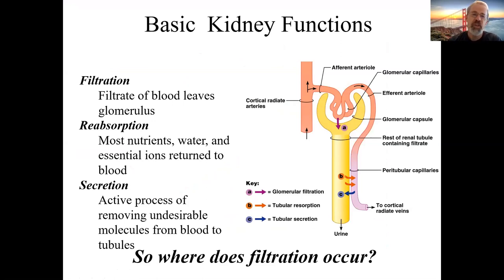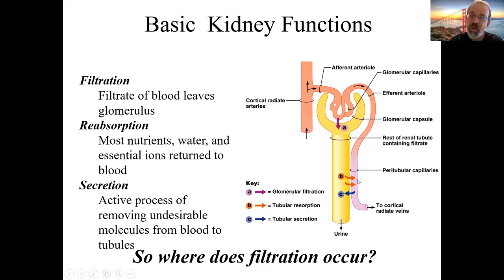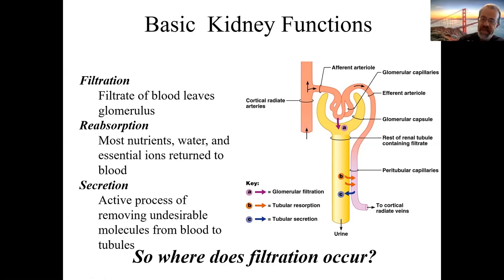To summarize: filtration is the plasma leaving the glomerulus and entering the capsule. What gets reabsorbed includes most nutrients, water, and essential ions like sodium, potassium, and calcium — mostly returned to the blood. What gets secreted includes undesirable molecules from the blood back into the tubules — metabolic waste, toxins. The urinary system is more of a regulatory organ than simply an excretory one.